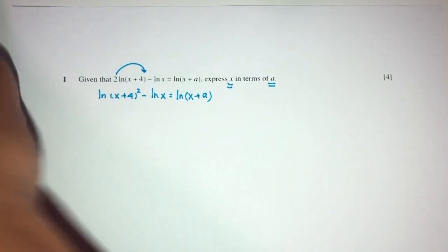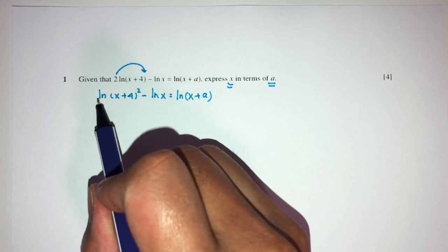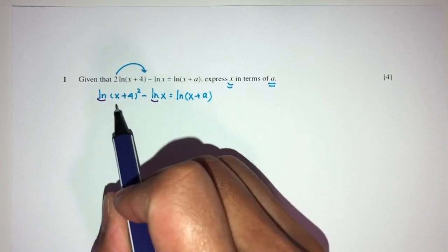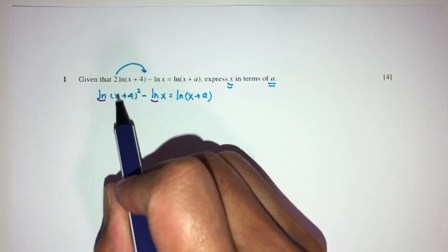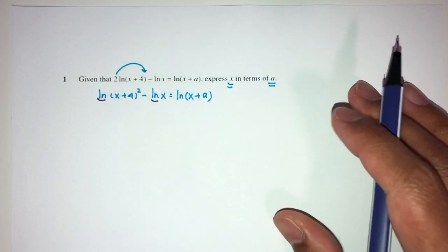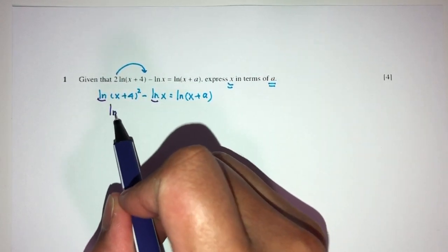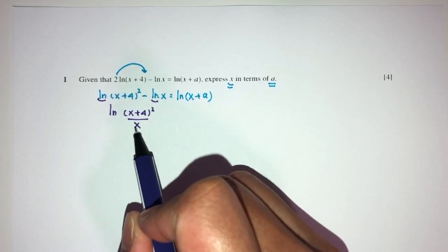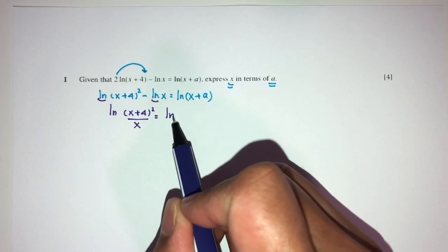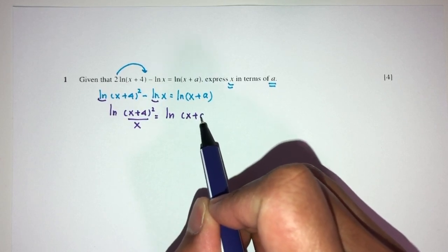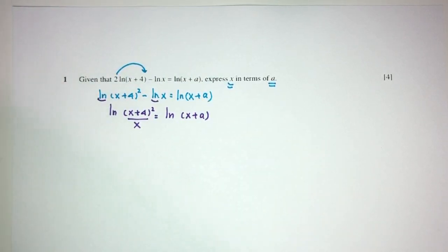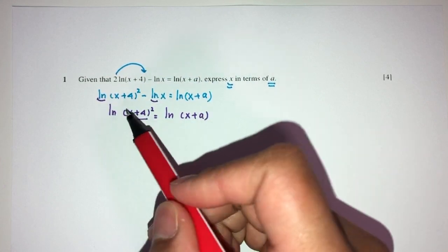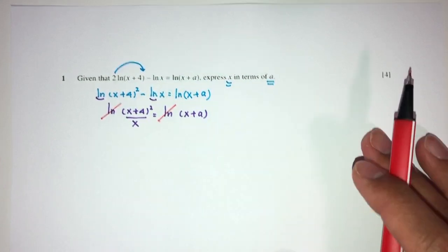Now we can combine those two together because here we have the same ln, and this is minus here. I can combine them together. You have ln of x plus 4 squared divided by x equals ln of x plus A. Since we have ln on both sides, they will cancel out.